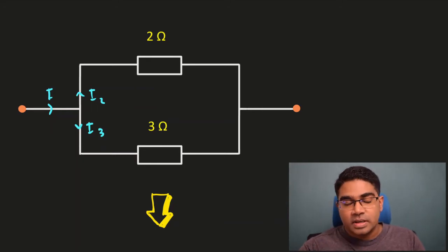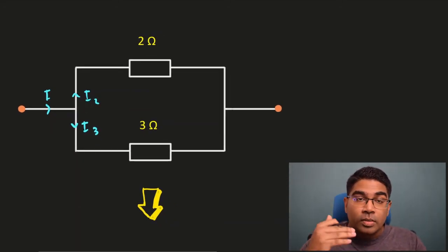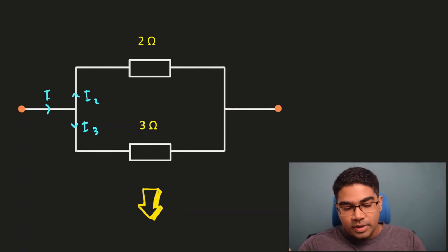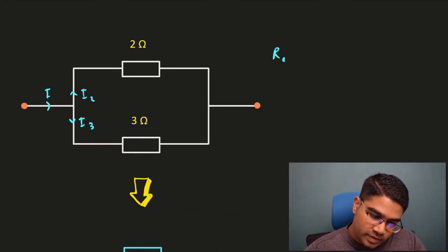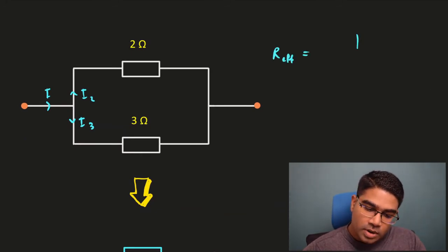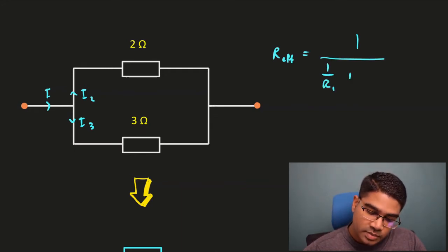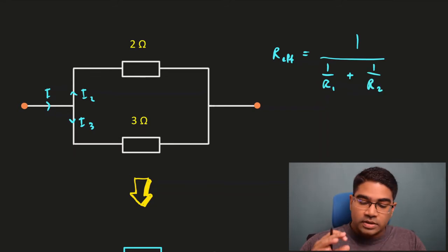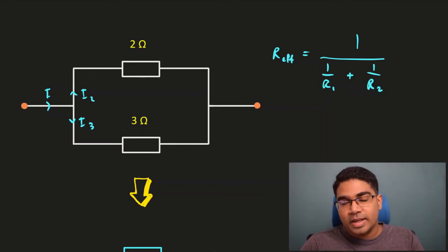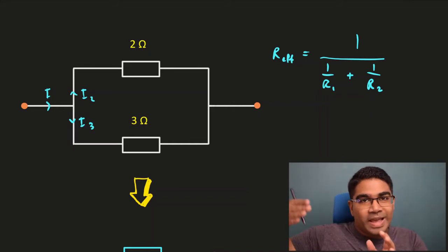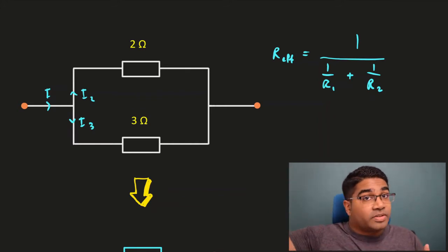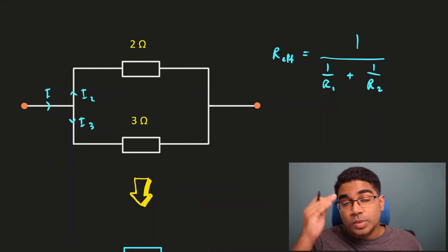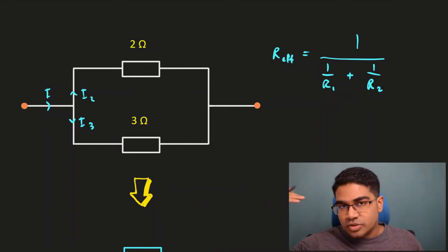How do we combine the resistance here? We cannot directly add them as we did before. For parallel circuits it is a bit different. The effective resistance equals 1 over (1/R1 + 1/R2). This does not only apply to two resistors — if you had more, you could keep adding. For series it's R1+R2+R3+..., and for parallel it's 1/(1/R1 + 1/R2 + 1/R3 + ...).